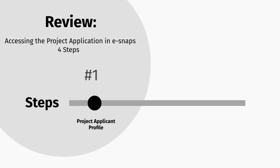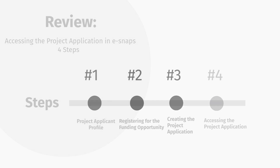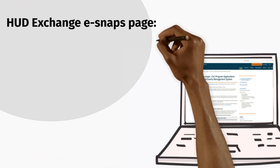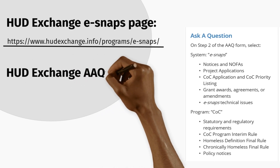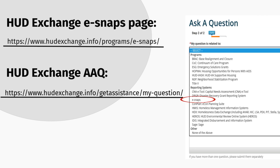Remember: once the competition period opens each year, in order to access a project application for the first time, you must go through the four steps mentioned previously in this video. Remember the hint — the four steps are listed on the left menu bar. Thank you for your interest in learning about eSNAPS. Please visit the HUD Exchange eSNAPS page to view other helpful resources. If you have any further questions or run into any technical issues, please submit a ticket to the HUD Exchange Ask a Question virtual help desk, and remember to select eSNAPS from the "My Question is Related to" drop-down menu.